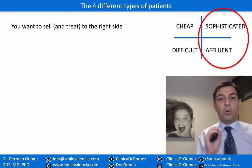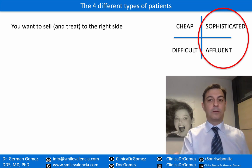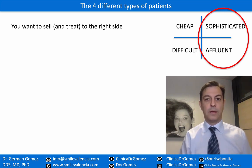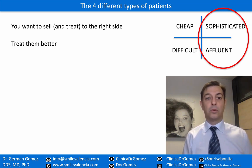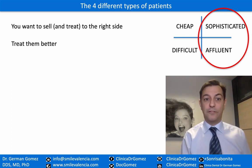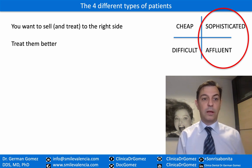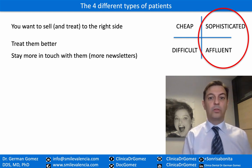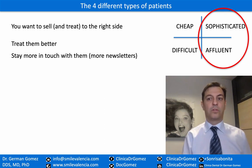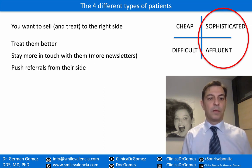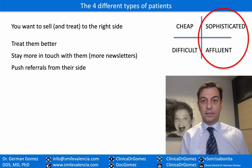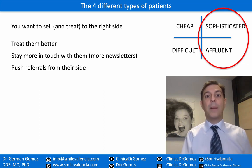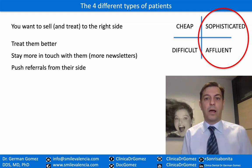Now, you want to sell and treat to the right side: sophisticated patients and affluent patients. You do not want to treat the left side — cheap and difficult patients. So what do you do? You treat sophisticated and affluent patients better than the others. You stay more in touch with them. You send newsletters maybe two or three times a year to all patients, but four, five, or six times a year to sophisticated and affluent patients. You push for referrals from their side, because affluent and sophisticated patients likely know other people who are also affluent and sophisticated.